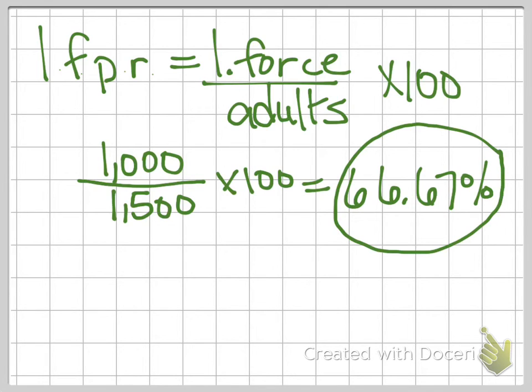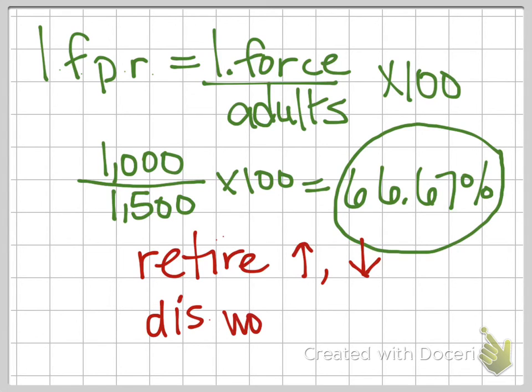And so what we'll see is that in an economy, let's say, where we suddenly have a lot more people who retire. So like our baby boomer generation, a big part of our population is starting to retire. So if retirees, if that number goes up, then it's going to cause our labor force participation number to go down. Likewise, if we have a lot of those discouraged workers, the people that have given up. So if we see the number of discouraged workers increase, then again we'll see our labor force participation rate decrease.